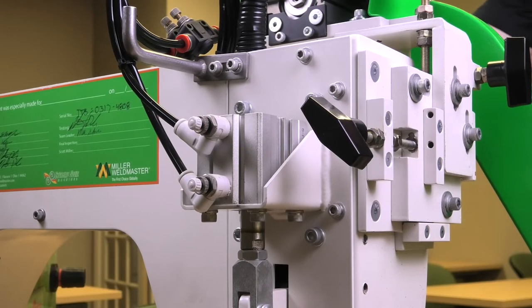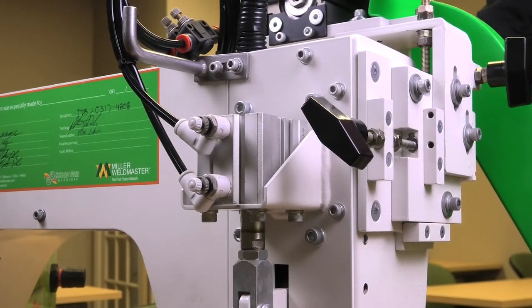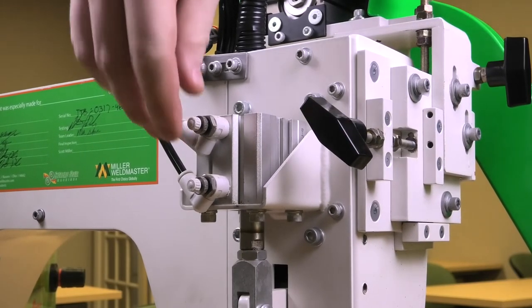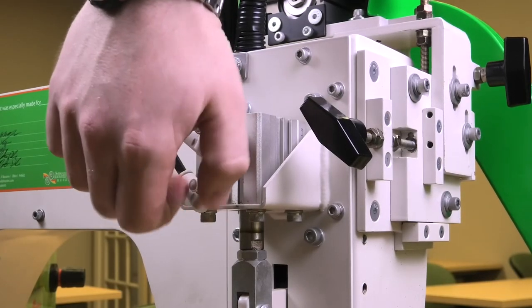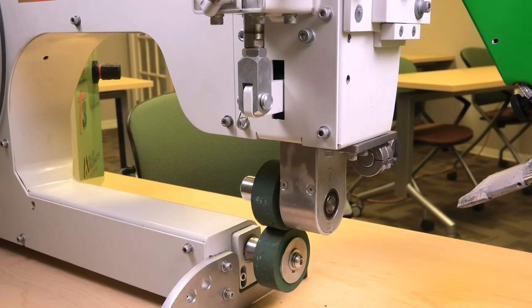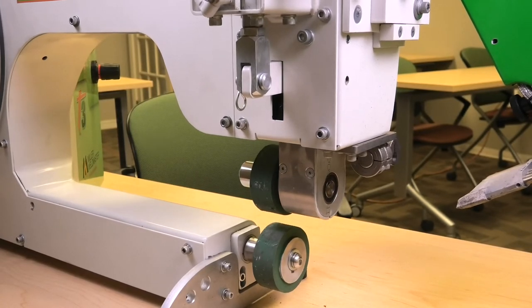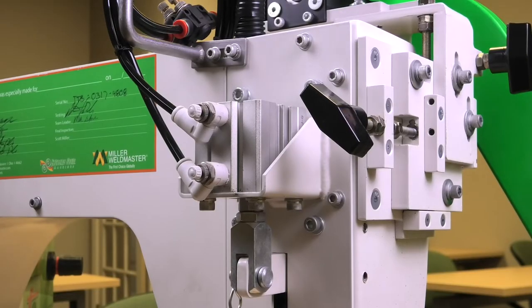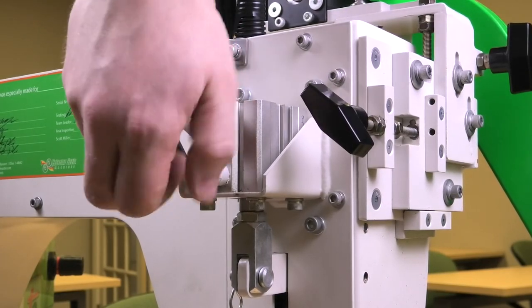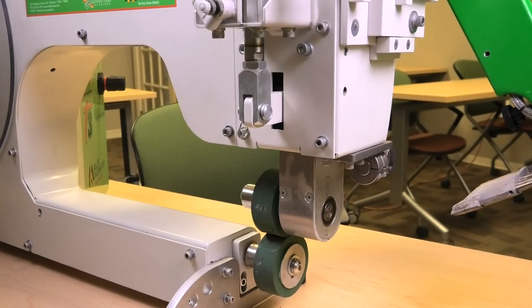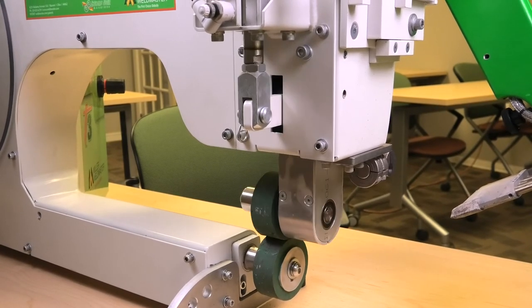Now we are going to set the speed for which the weld rollers go up and down. There's these two little knobs right here. If you spin them all the way in, you can see how it barely makes it up and it's very, very slow. And if we want it to go faster, we just need to spin these out. How you have this set is up to your operator, whether you want it to go up and down slower or faster.